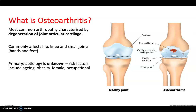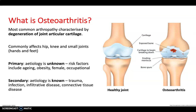You can have primary osteoarthritis where the cause is unknown, and risk factors include aging, obesity, being female, or occupational risks involving manual handling. There's also secondary osteoarthritis where the cause is known — due to things like trauma, infection, infiltrative disease, or connective tissue diseases.